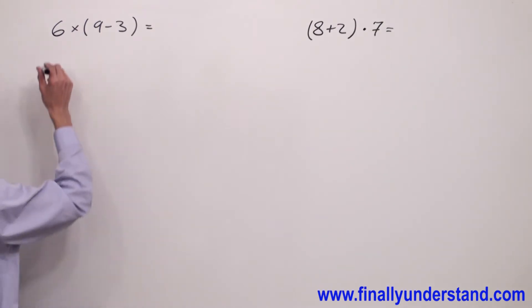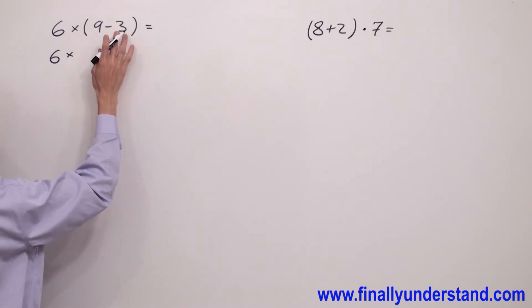So we have 6 times and inside of the parentheses I have 9 minus 3. 9 minus 3 is equal to 6.